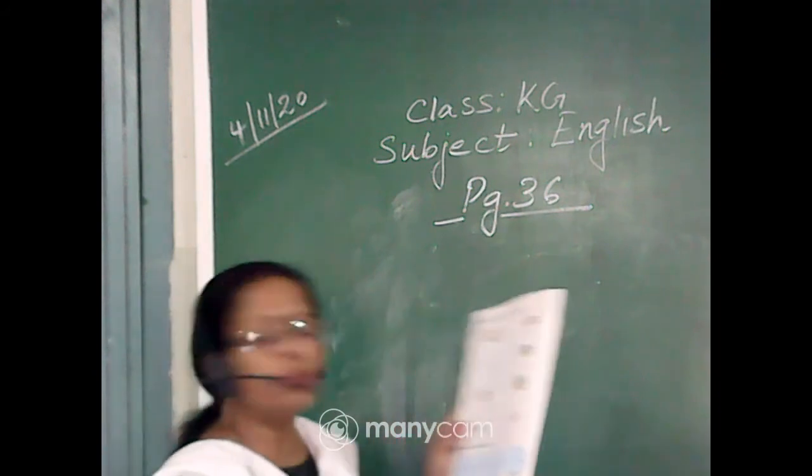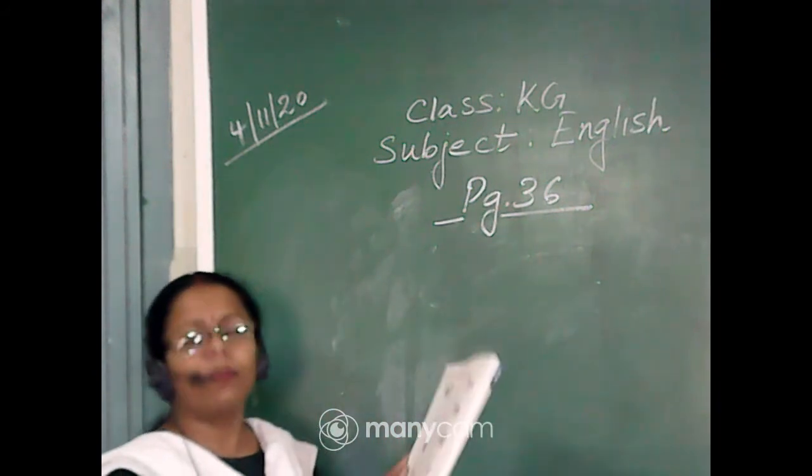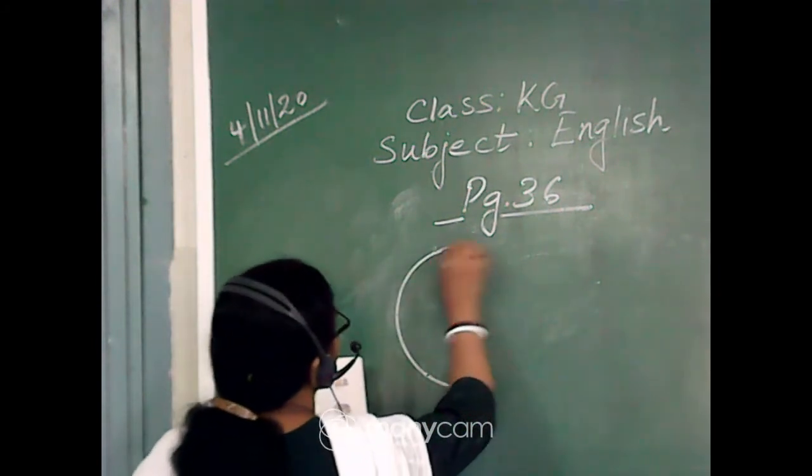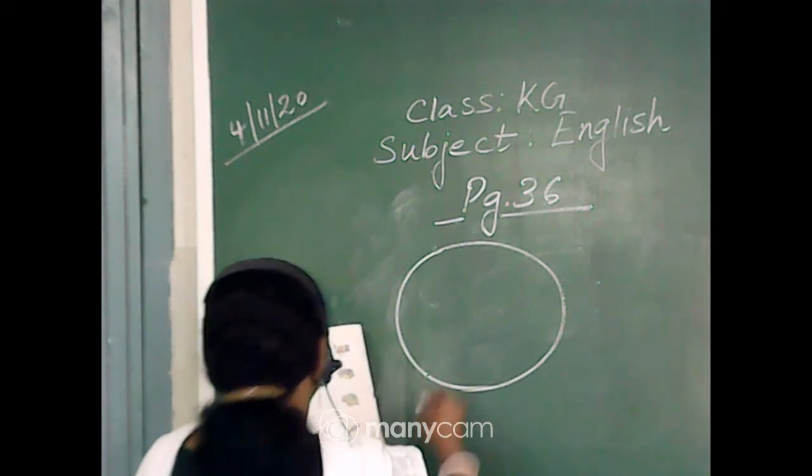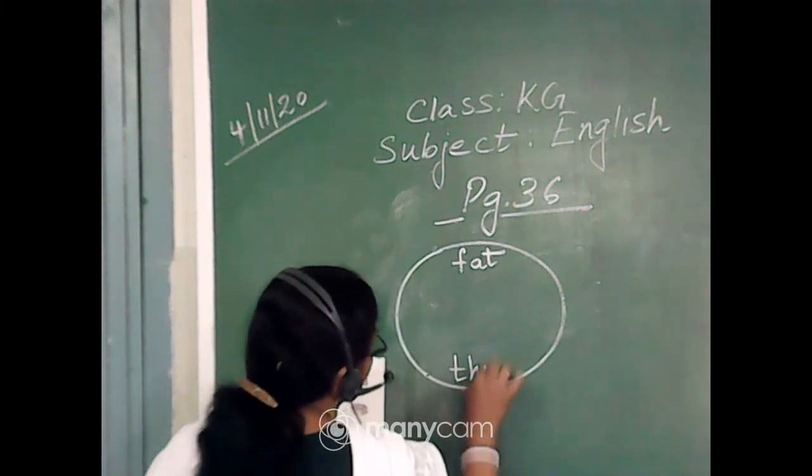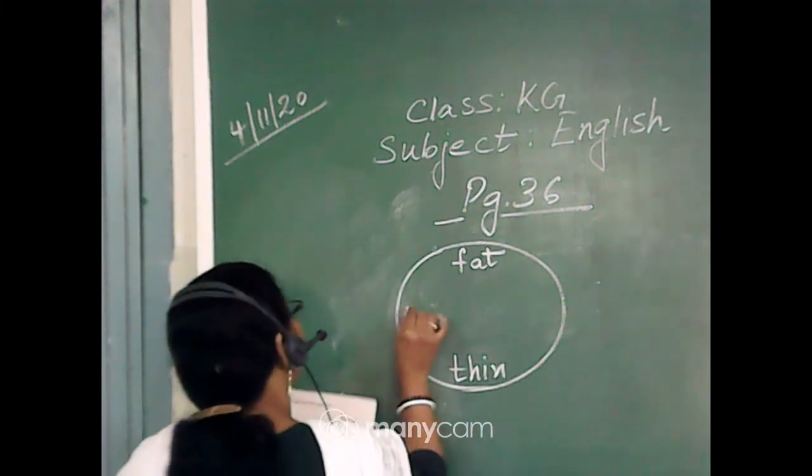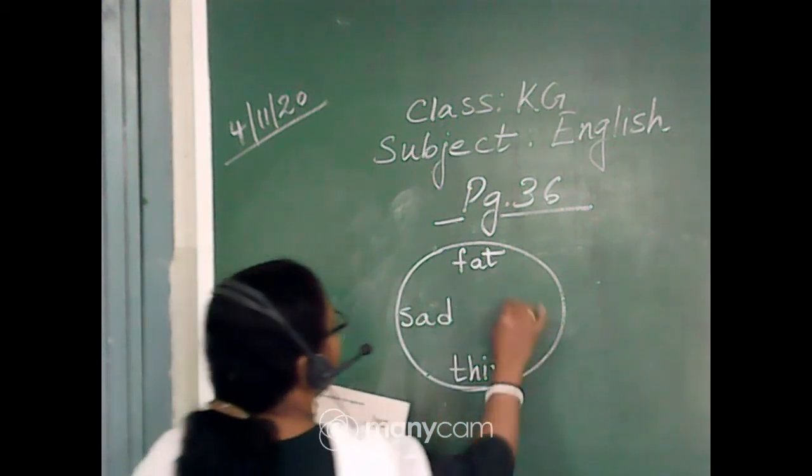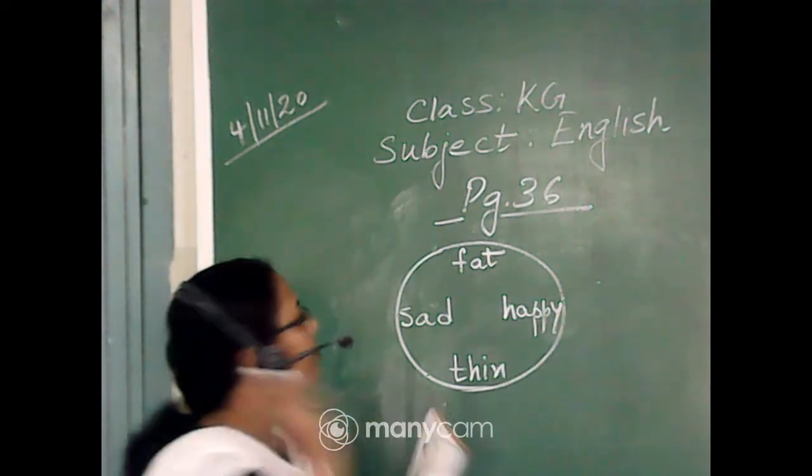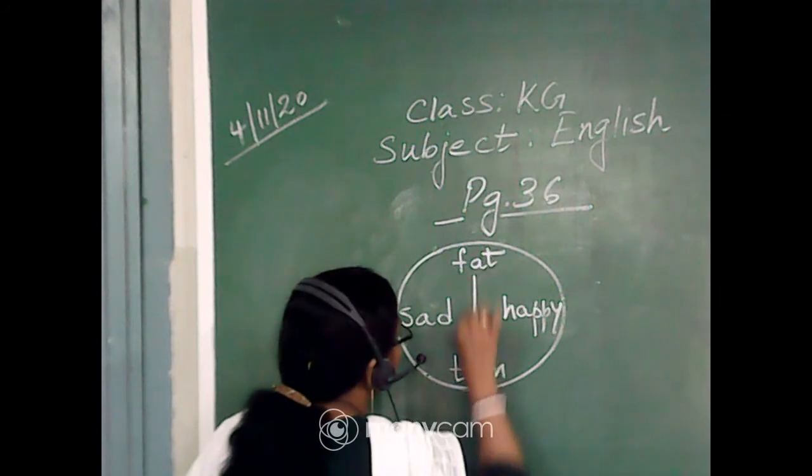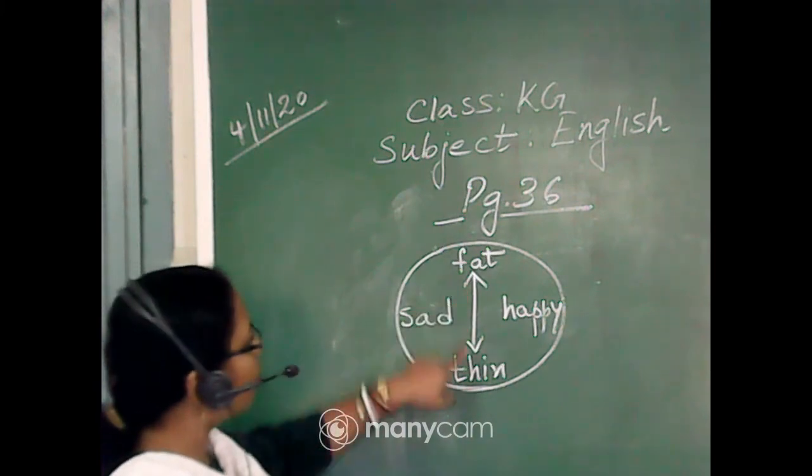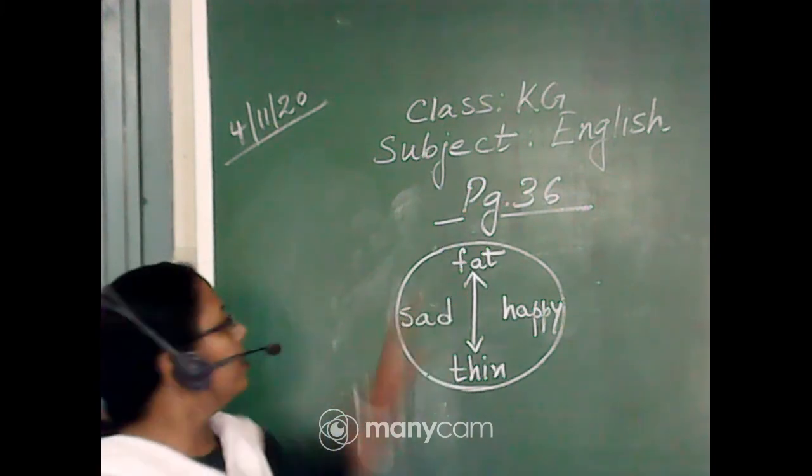Join the words to their opposites. So here is the first one, that is fat and here comes thin. Here is sad and here is happy. Okay? Done? So we will match fat and thin with the vertical line and put two arrows, one at the top and one at the bottom. Fat, thin.